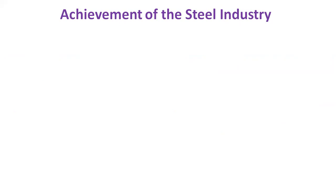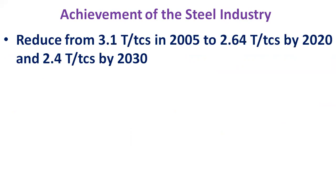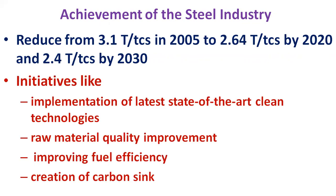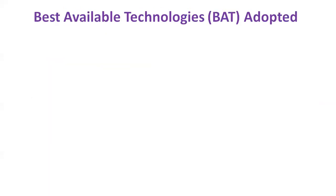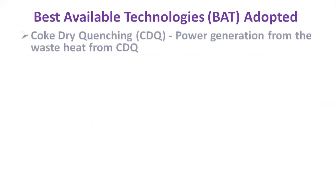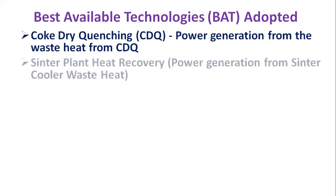The steel industry is committed to minimizing the impact of its operations on global climate change and reducing its carbon footprint. As per the NDCs submitted for the steel sector, the average CO₂ emission intensity of the Indian steel industry was projected to reduce from 3.1 tons per ton of crude steel in 2005 to 2.64 tons per ton by 2020 and 2.4 tons per ton by 2030 — approximately one percent per year. Initiatives include implementation of state-of-the-art clean technologies, raw material quality improvement, improving fuel efficiency, and creation of carbon sinks.